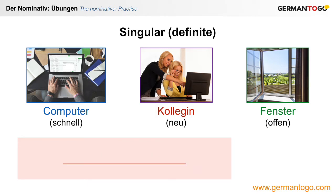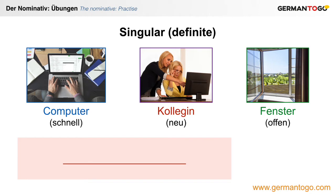Now, Kollegin, which is feminine, and neu. How do you say the new female colleague? Die neue Kollegin. And a neutral noun: Fenster and offen — window and open. How do you say the open window? Das offene Fenster.